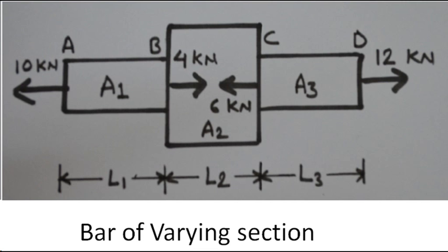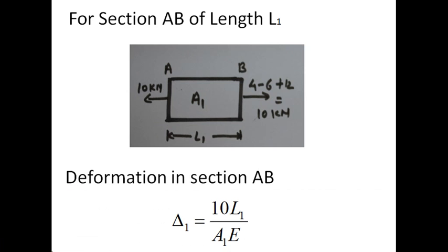To compute the total deformation we draw the free body diagram of individual sections of the bar. Taking the first section AB with area A1 and length L1, the net force at the left side is 10 kN, and the net force at the right side is 4 minus 6 plus 12, which equals 10 kN. So the net force at section AB is 10 kN, and the total deformation of section AB is 10·L1/(A1·E).